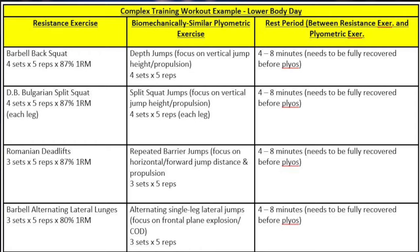This next chart shows an example of how a complex training workout session for a lower body day can be designed. The first column shows four different resistance exercises. The second column shows plyometric exercises that are biomechanically similar in movement pattern and can be paired with each resistance exercise. The third column shows rest period lengths between performing one resistance exercise set and a plyometric exercise set. For example, the athlete will perform the barbell back squat — four sets of five repetitions at a heavy load, 87% of their one repetition max — to help with the potentiation effect.